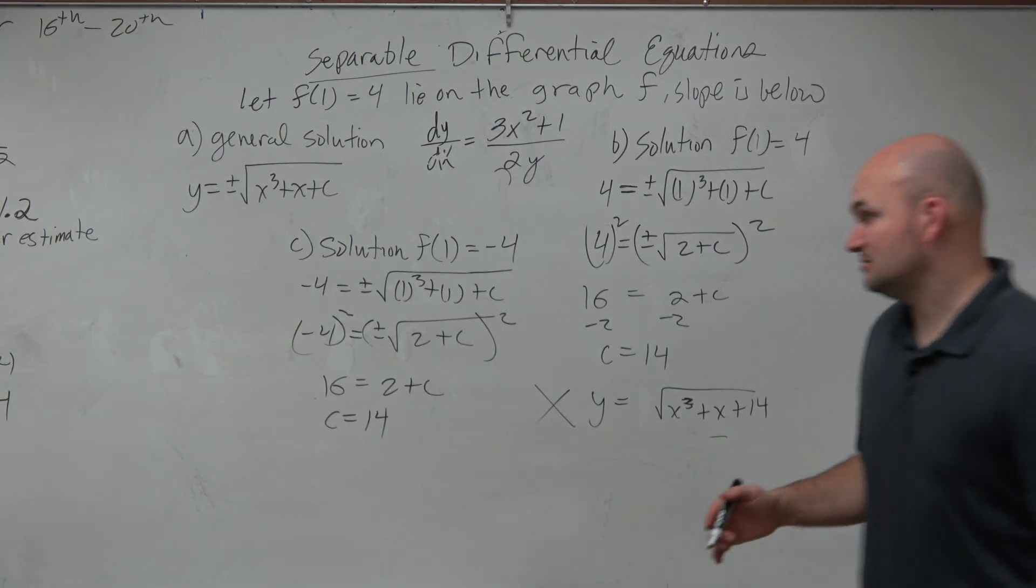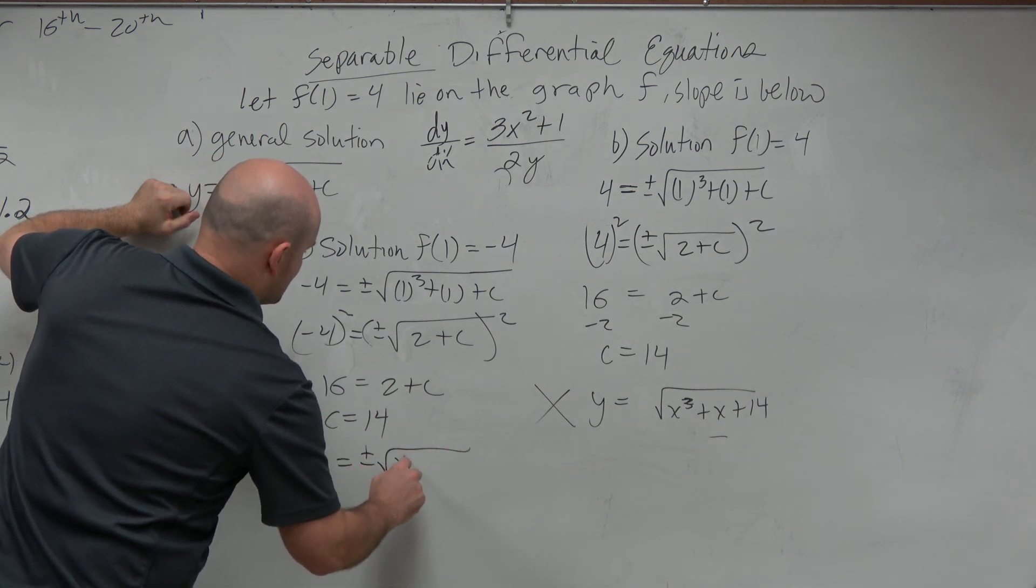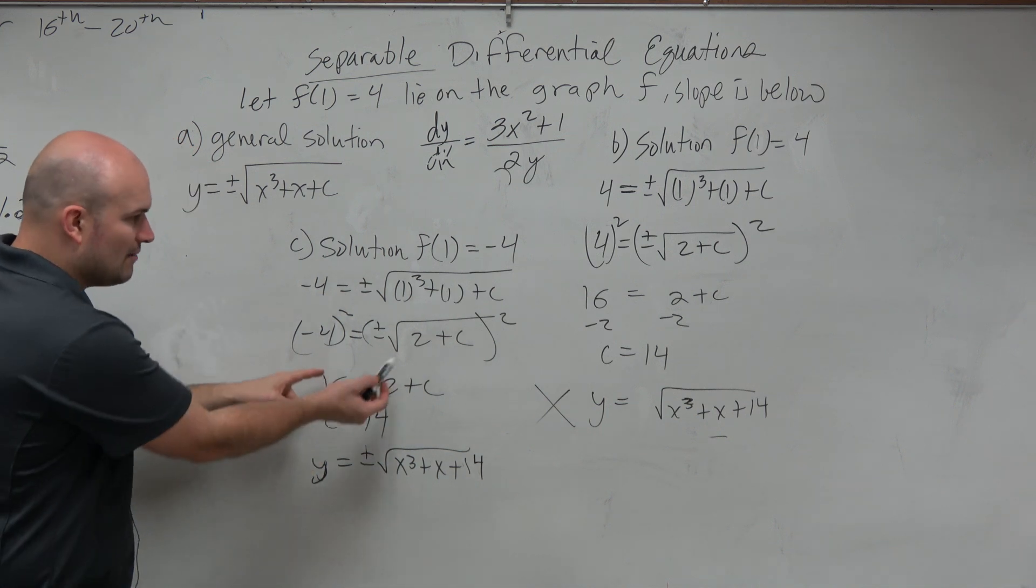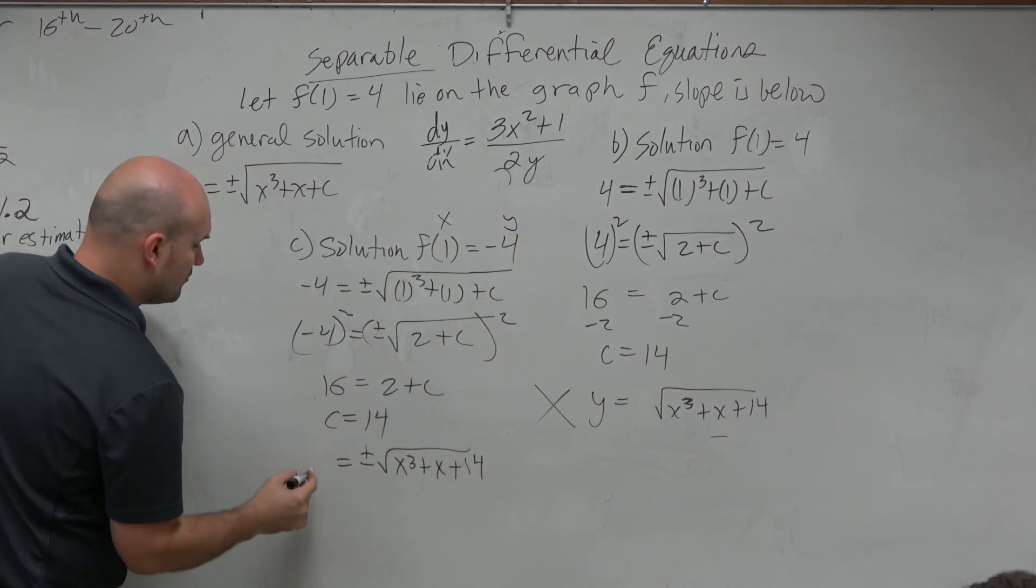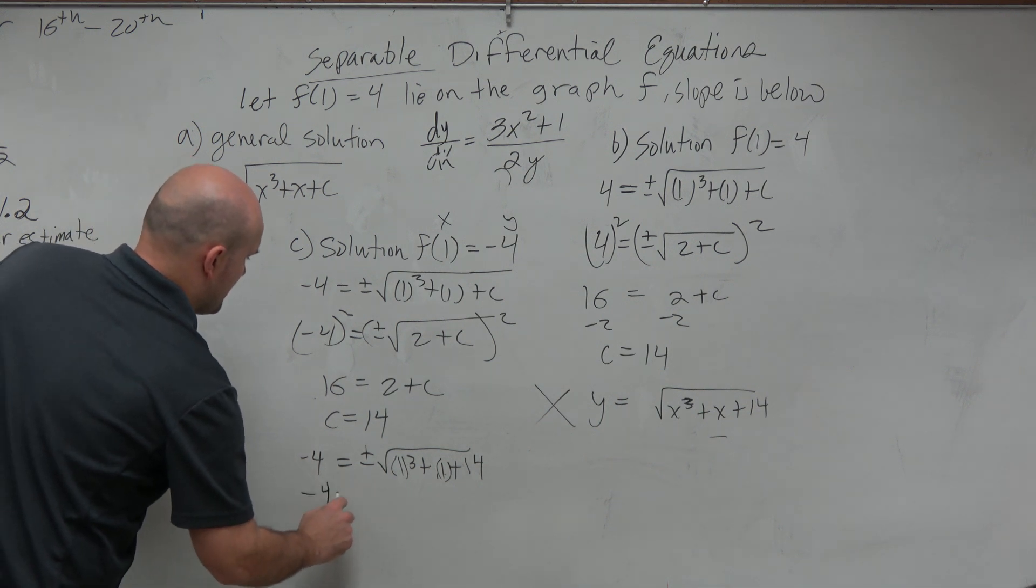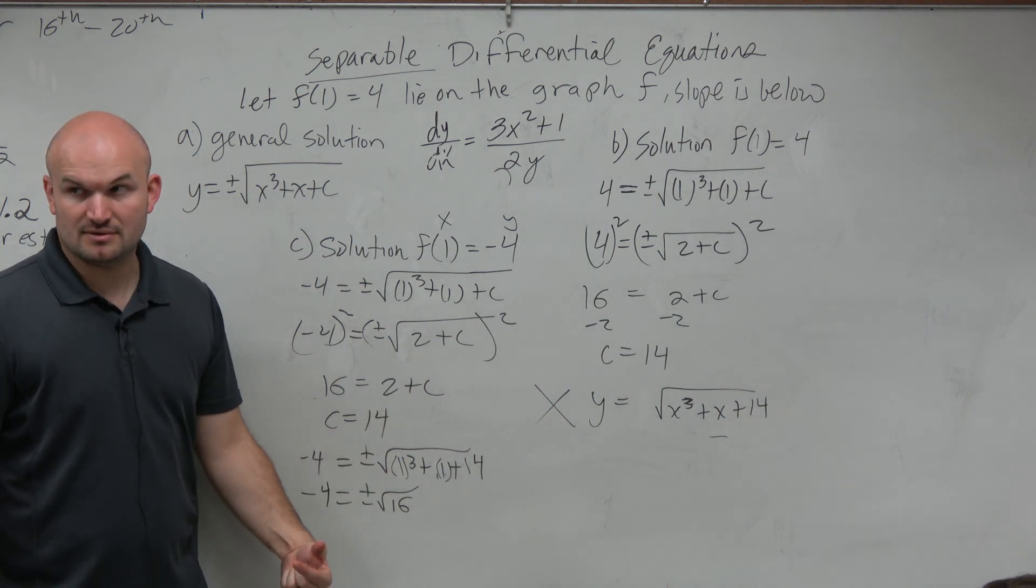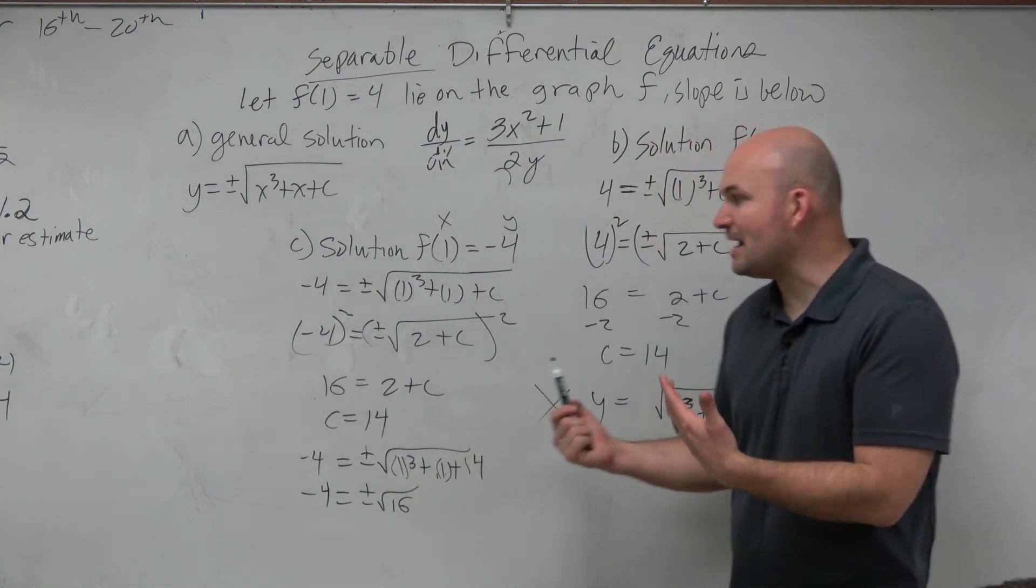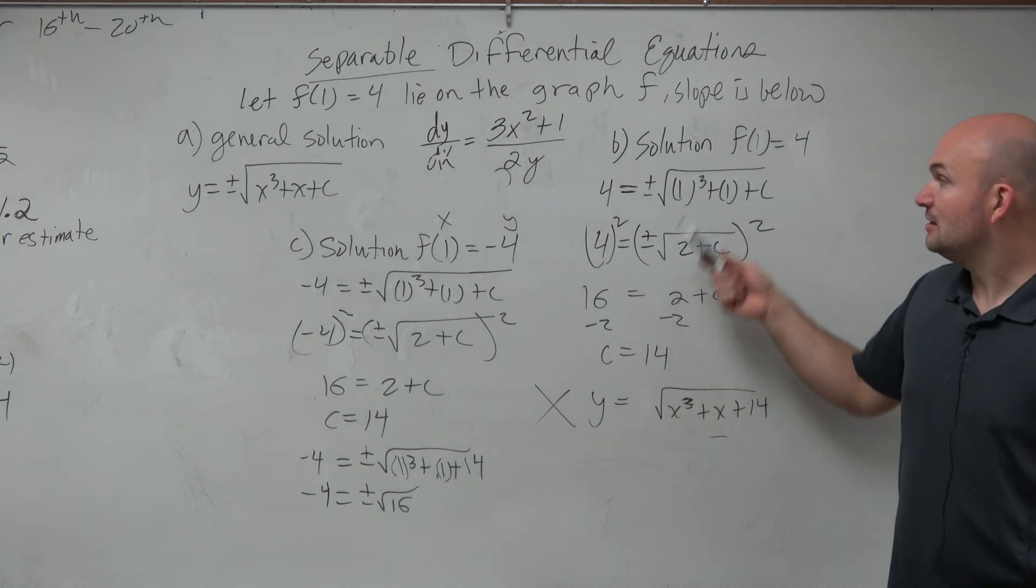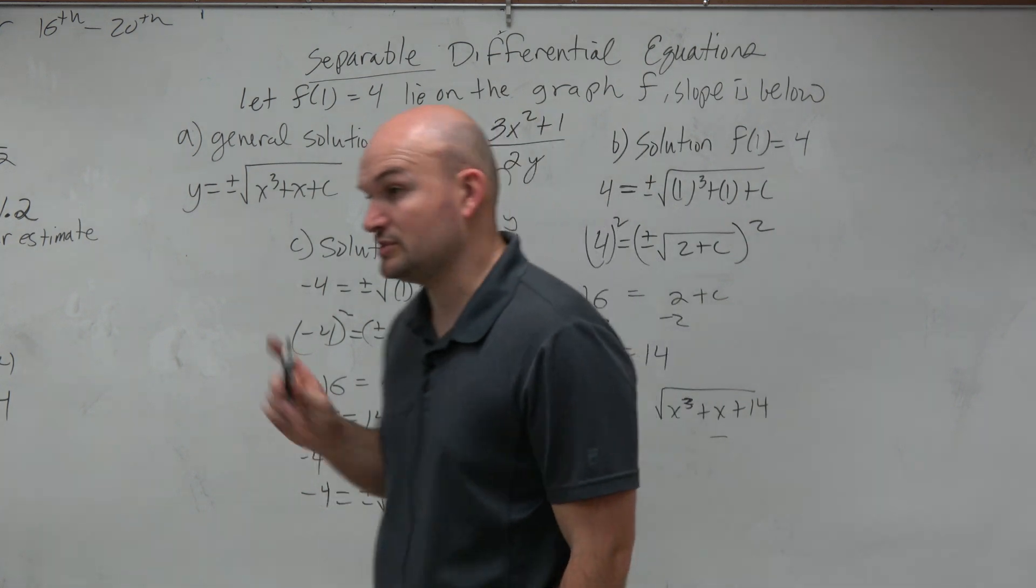So you get the same value c. However, when I go back to my general solution, y equals plus or minus square root of x cubed plus x plus c, which is 14 now, watch what happens. Now when I plug in my point, negative 4, 1, now which equation should I be using, the negative or the positive? The negative. Do you guys kind of see how that would work? So the plus or minus is OK for the general solution, but for the particular solution, you're going to have to check it. So once you find your value of c, then kind of go back to the original case and then plug that in to make sure you check it. Because it could be the positive, it could be the negative, all right? But it's only going to be 1.